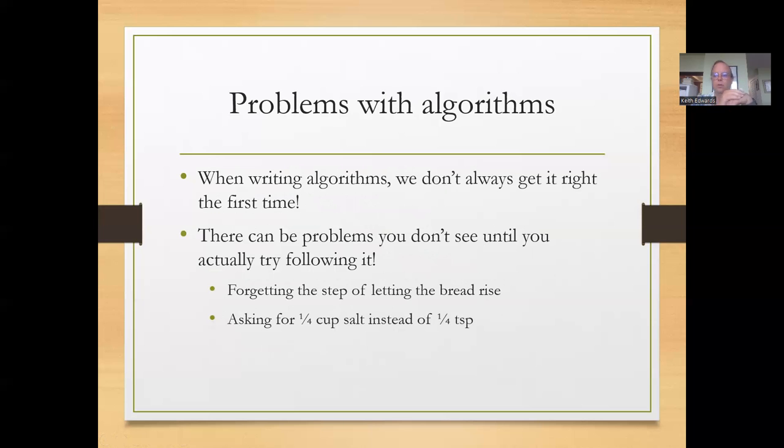So one of the things that you'll find in computer science as you take this journey is when you're writing algorithms, you don't always get it right the first time. I certainly don't. And there can actually be problems, even if it compiles and runs, that you don't see until you actually try following it. For example, in our bread making routine that we had there, not an algorithm, there's forgetting the step of letting the bread rise or asking for a quarter cup of salt instead of a quarter teaspoon. So you can have problems specifying things that don't necessarily work out.